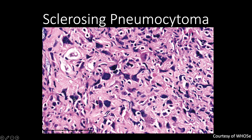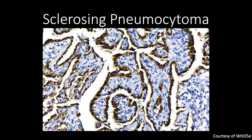So let that not confuse you, and just know that this can happen in sclerosing pneumocytoma. Here, courtesy of the Hu 5th edition, you have this biphasic pattern of cytokeratin, where it stains positive in the surface cuboidal cells, but not the round stromal cells.